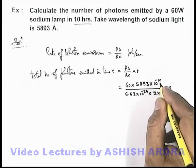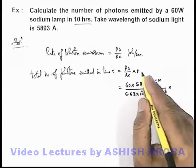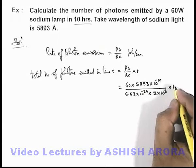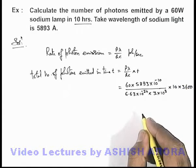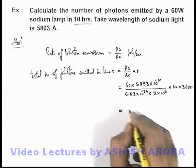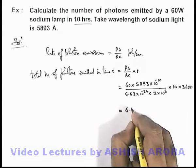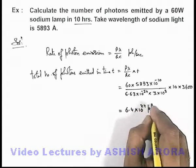For the total time, we use 10 hours, so the number of seconds in 10 hours will be 10 × 3600. If we simplify this, the result we are getting is 6.4 × 10^24 photons.